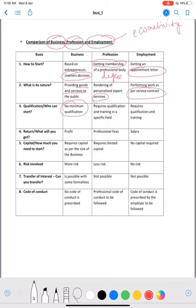Now, how many qualifications are required? In business, there is no need of minimum qualification. But in profession, qualification is required according to the nature of profession. And in the same way, in employment also, qualifications are required according to the nature of job.